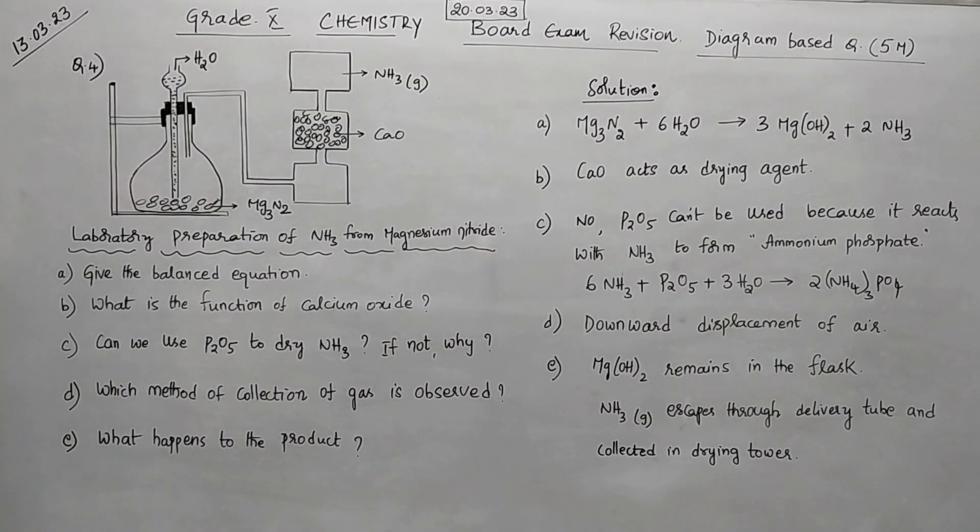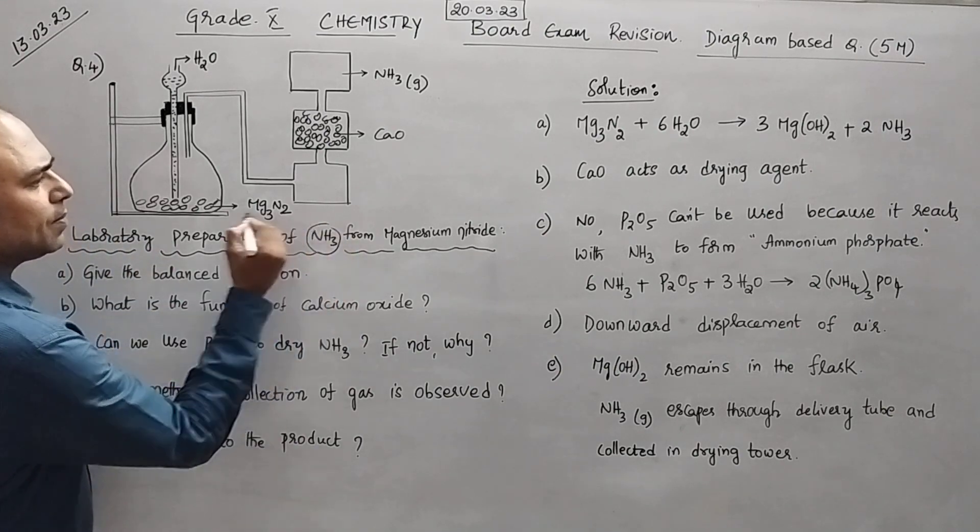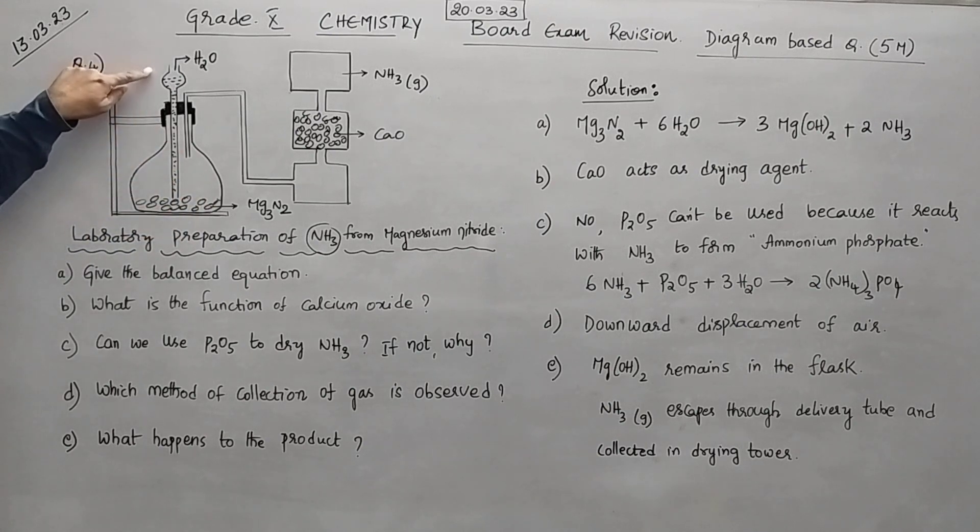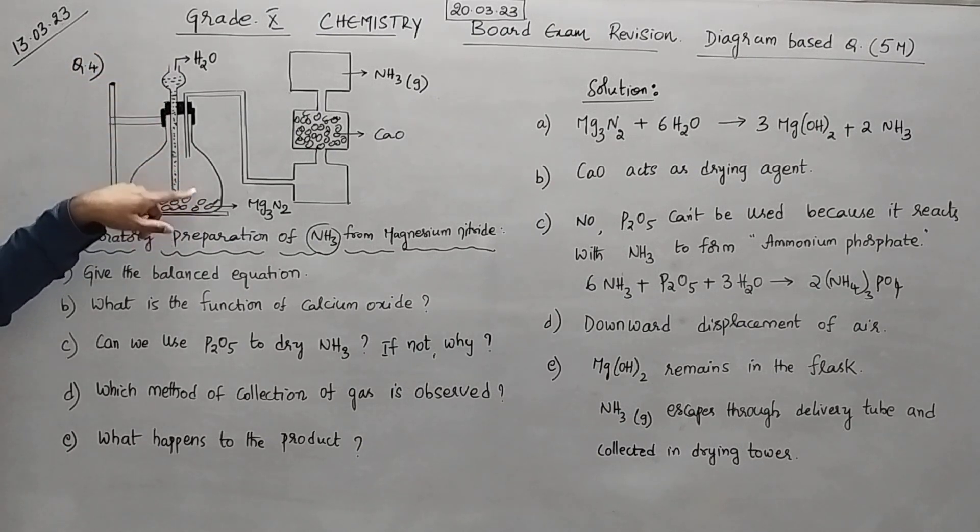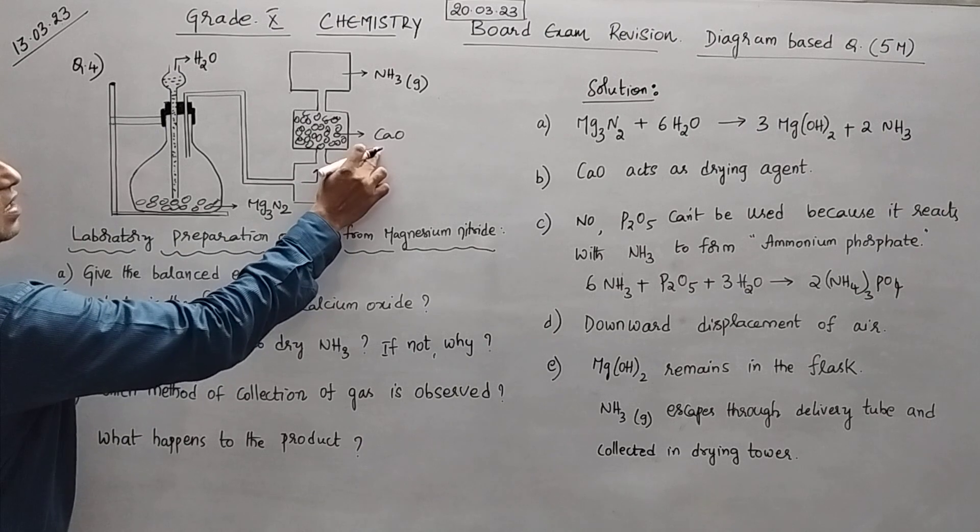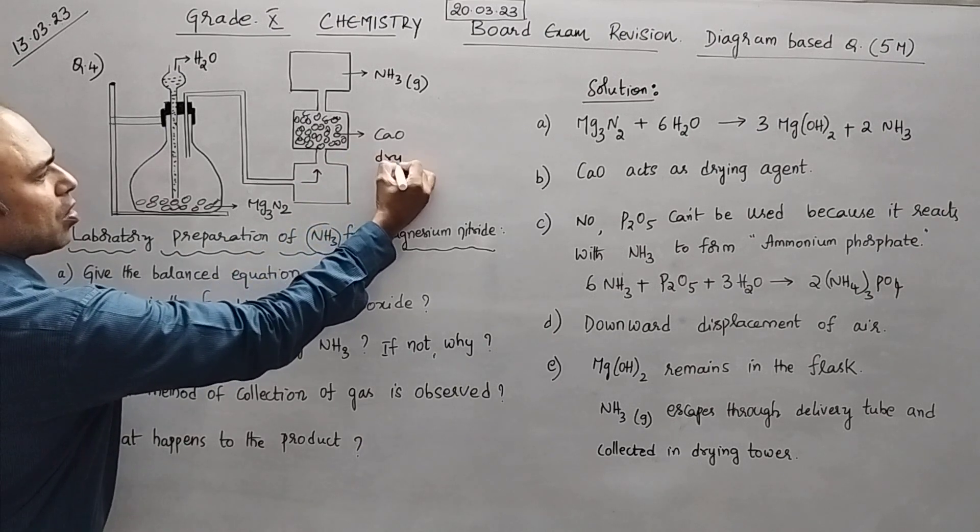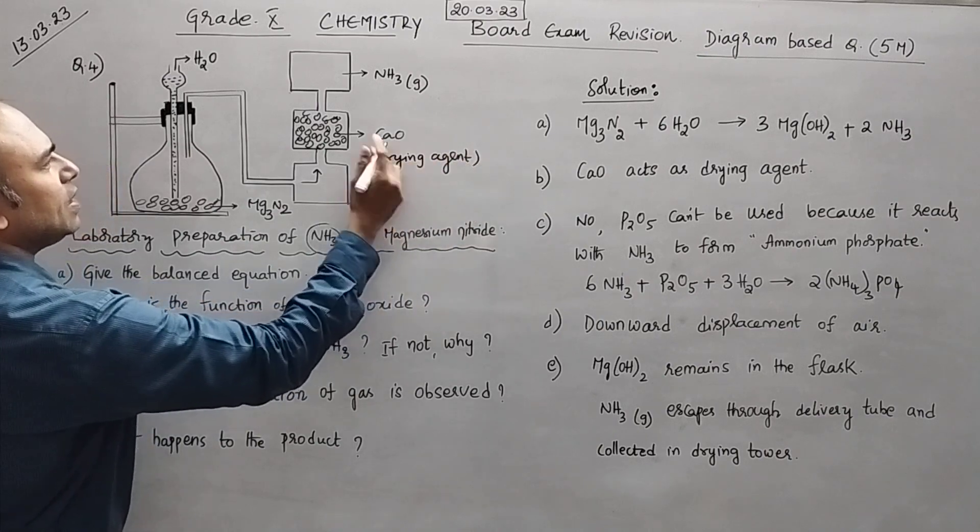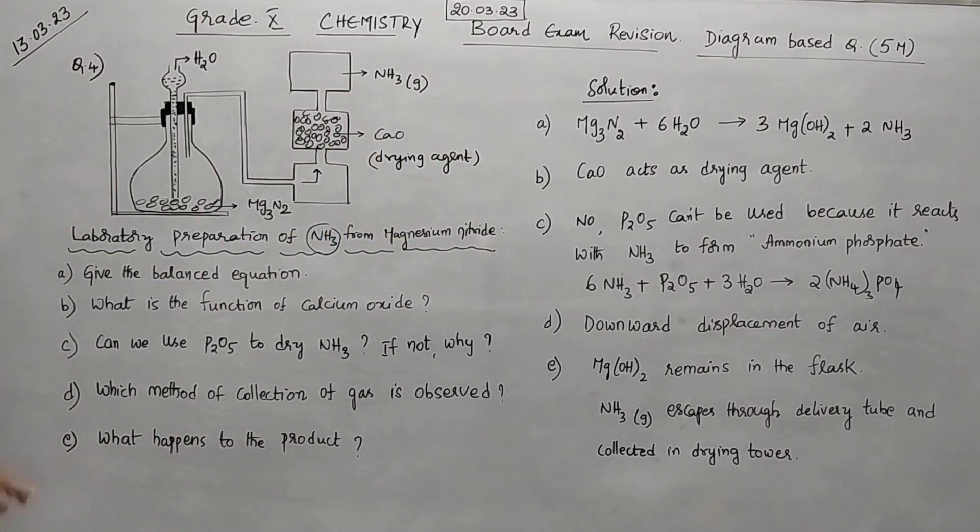Now question number 4. Laboratory preparation of ammonia from magnesium nitride. So Mg3N2 is taken in the flask. And in the funnel you are taking water. And these are the reactants what you have. So through this NH3 gas will pass. And calcium oxide is there, which is a drying agent. And finally it is collected in the drying tower. So this was the method of preparation of ammonia.